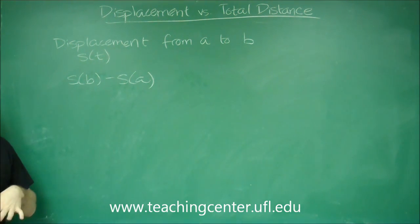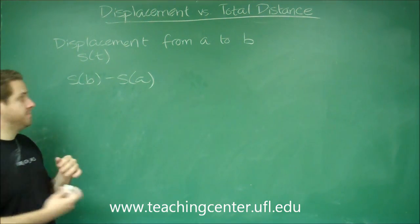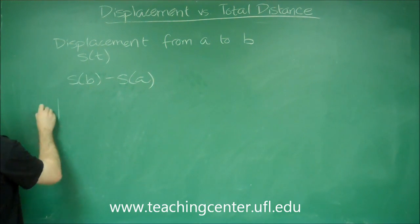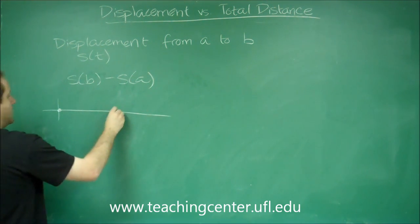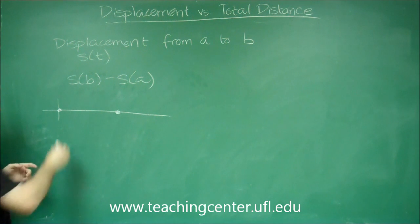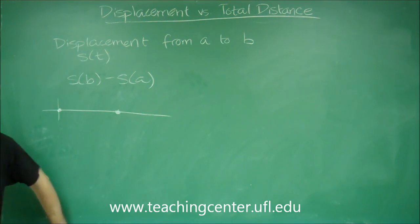What that tells you is how far away are you from where you started. So let's say we had a number line, and you start here, and you end up here. The displacement tells you how far away from your starting point are you.